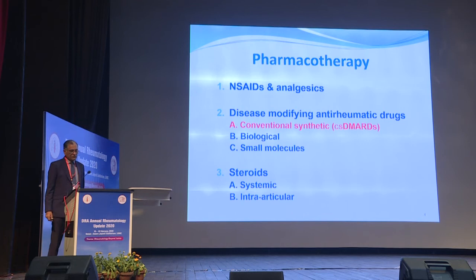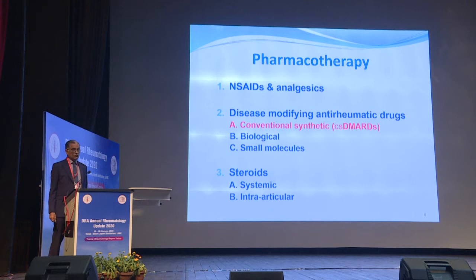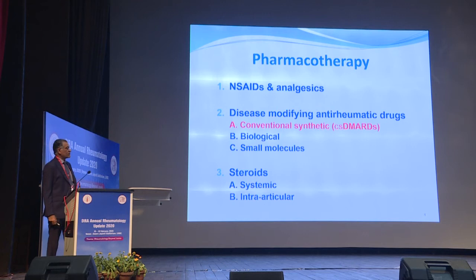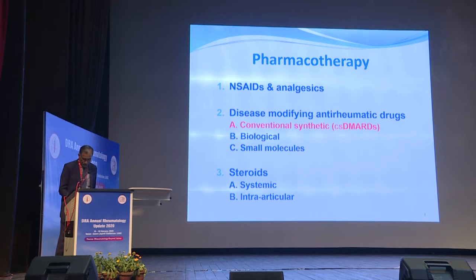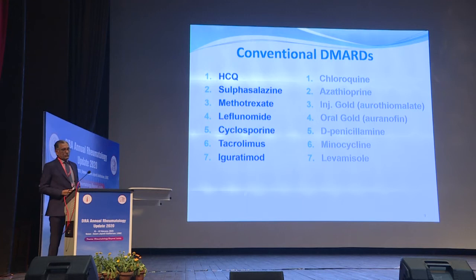There are so many pharmacological options now. These agents can be categorized into NSAIDs and analgesics as one group, then disease-modifying anti-rheumatic drugs — comprising conventional synthetic DMARDs, biologicals, and small molecules or kinase inhibitors, which are a third category. Strictly speaking, these small molecules can also be categorized under conventional synthetic DMARDs since they are synthesized, not biologic. Steroids are kept under a separate category, although they are also disease-modifying.